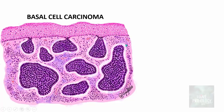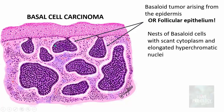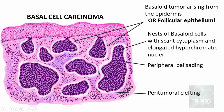Microscopically, basal cell carcinoma is a basaloid tumor. The tumor cells often arise from the epidermis or follicular epithelium. They form nests — basaloid cells with very scant cytoplasm and elongated hyperchromatic (darkly stained) nuclei. Important features include peripheral palisading and peritumoral clefting, which is a retraction artifact as the tumor islands retract. Presence of myxoid stroma may also be found.